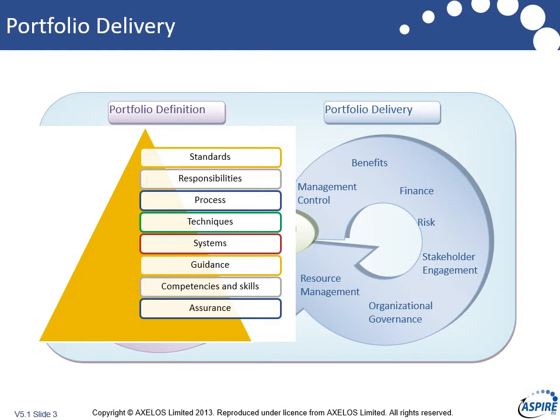If we look at risk, we could be talking about early warning indicators or different types of modelling — for example, Monte Carlo. When we look at stakeholder, we can be looking at analysis tools, tracking tools, and mapping tools. For finance, we could be thinking in terms of return on investment, return on capital employed, and a whole range of tools. For resource management, we're going to think about team performance and individual productivity. Management control is always going to be around issues and planning, and benefits is about the realization and delivery of change — so we need to think about techniques from that perspective.